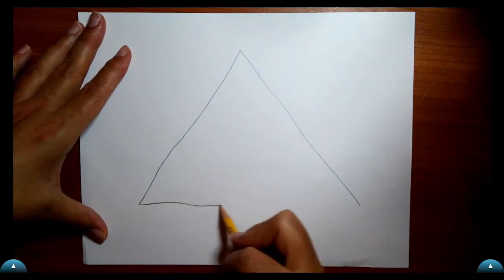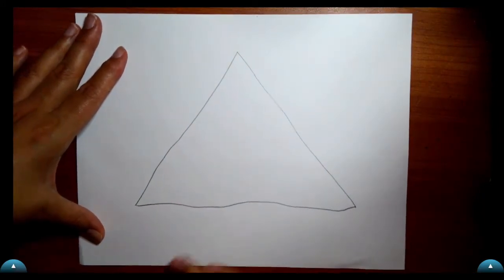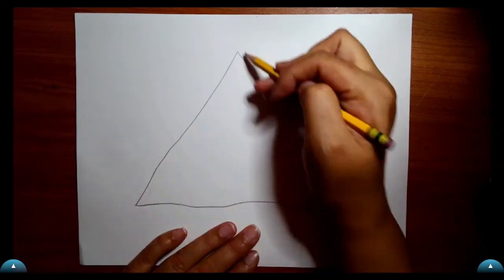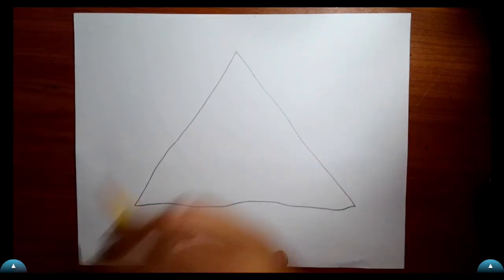Draw a line on the bottom. It's okay if your shape is wobbly or not straight. Make sure it's big on your paper.